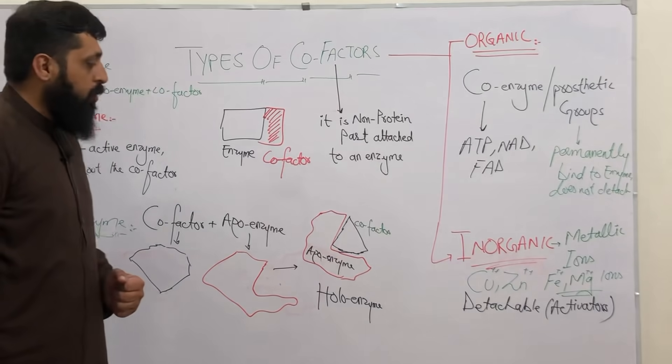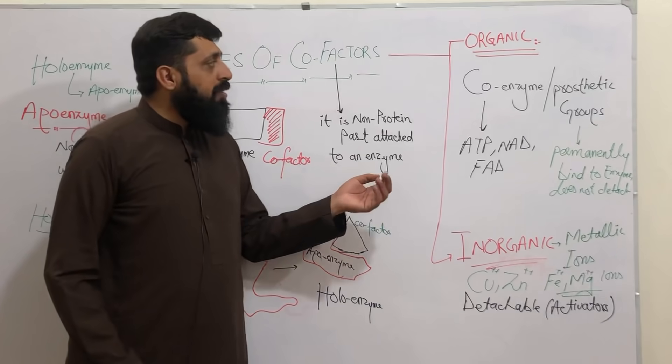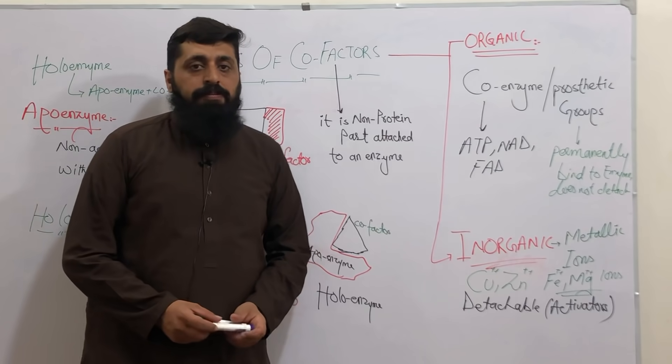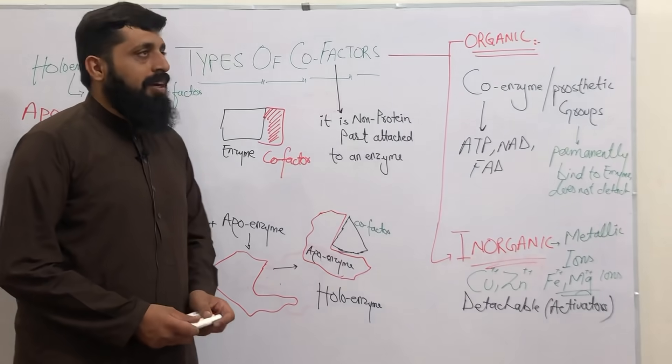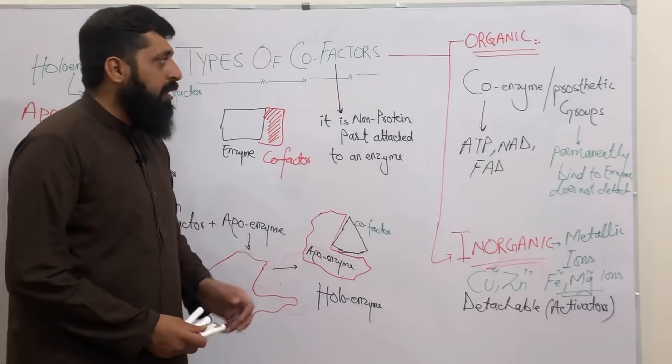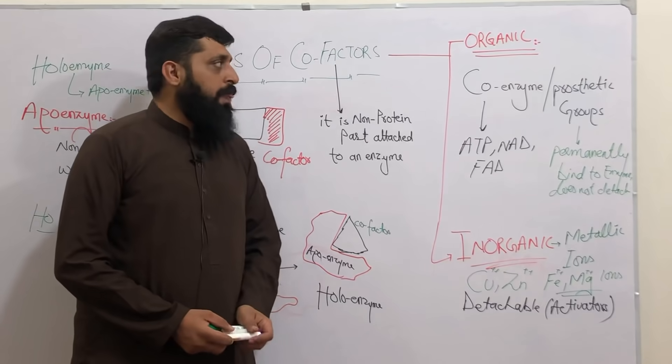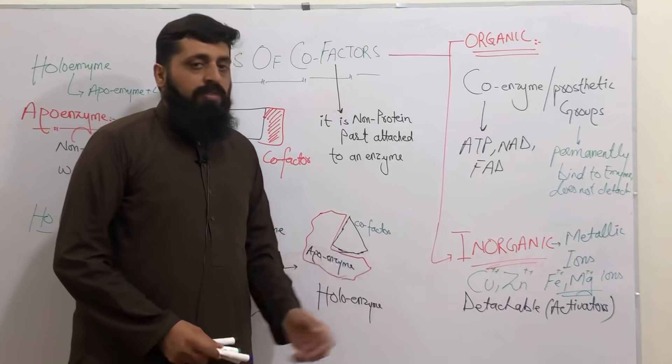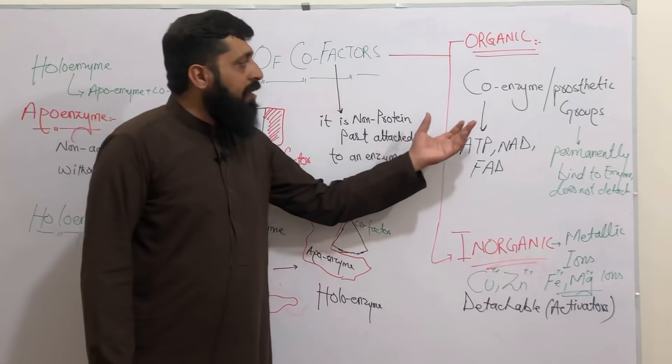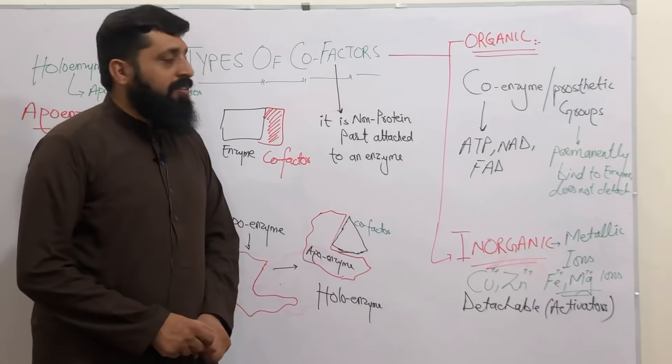When we categorize cofactors, cofactors can be organic and inorganic. Since in the catalytic process or product formation, substrate ko catalyze karne mein enzyme has its own role, similarly cofactors are also divided this way. Some cofactors are organic and some are inorganic. Organic cofactors have two categories: number one is coenzyme and the other one is prosthetic group.